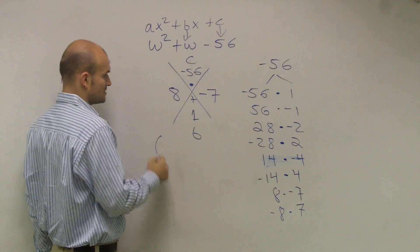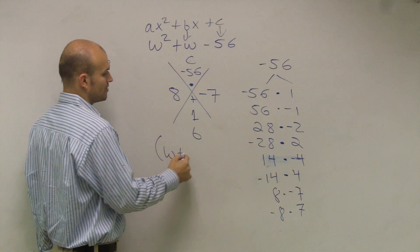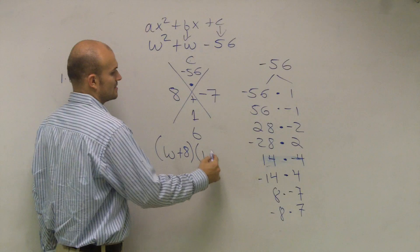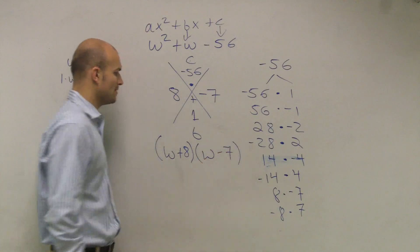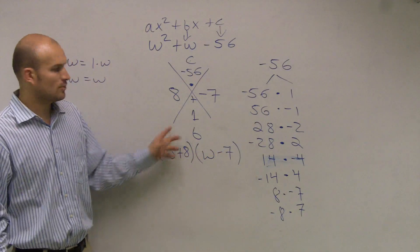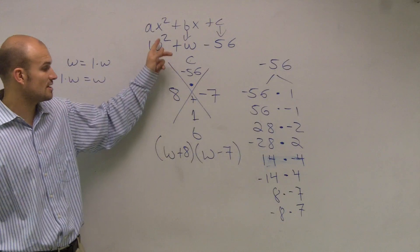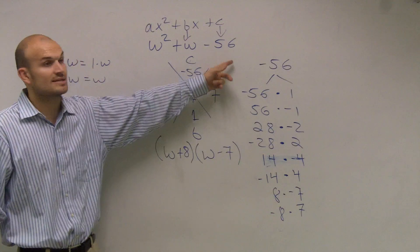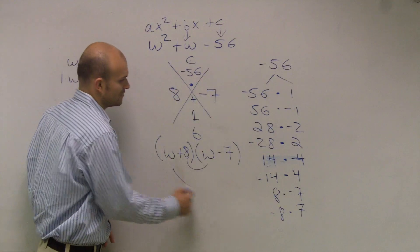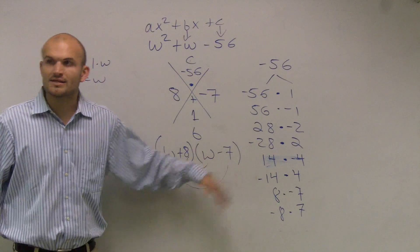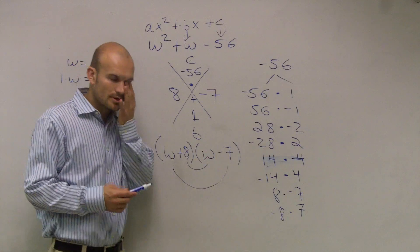I rewrite this as two binomials. It's going to be w plus 8 times w minus 7. And remember, why do we use the w's? Because remember, when we do FOIL, we multiply our first two terms. w times w gives us w squared. Our last term, 8 times negative 7 gives us negative 56. And then when we do this, to FOIL the checker answer, that will give us our middle terms. All right? And that's it. That's fine.